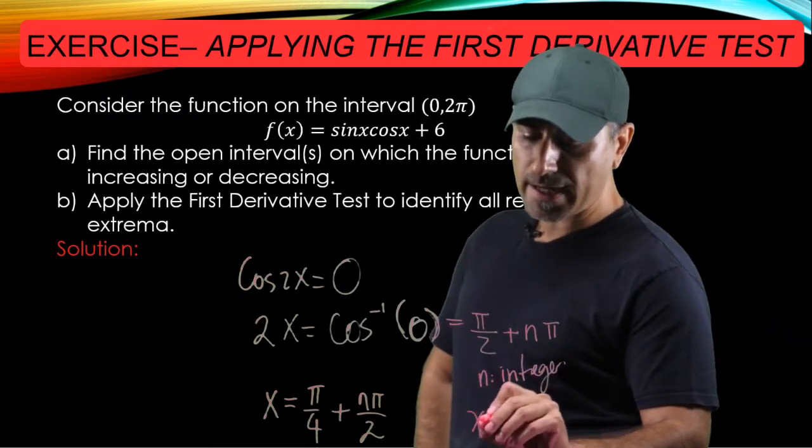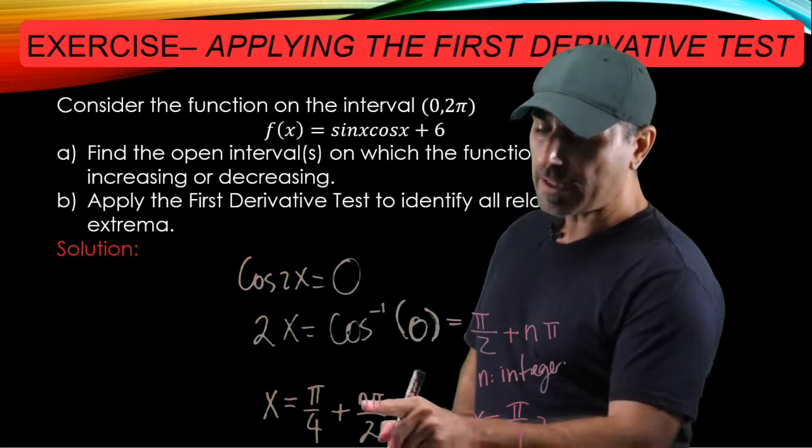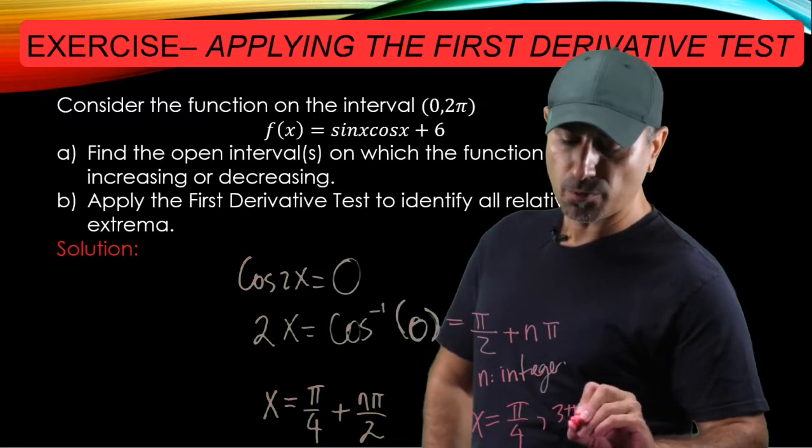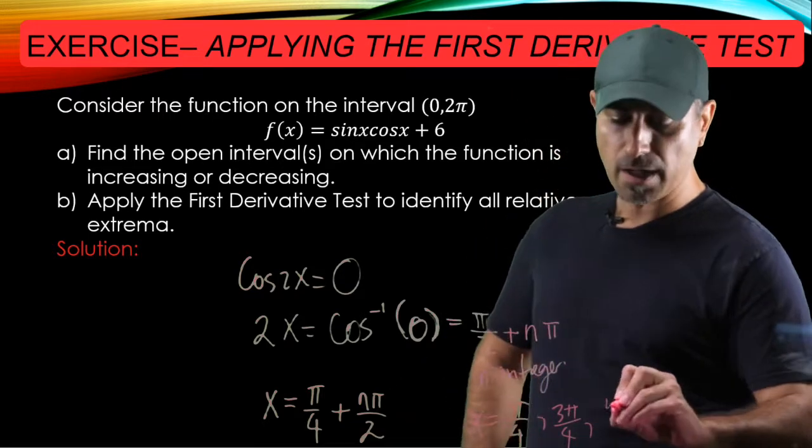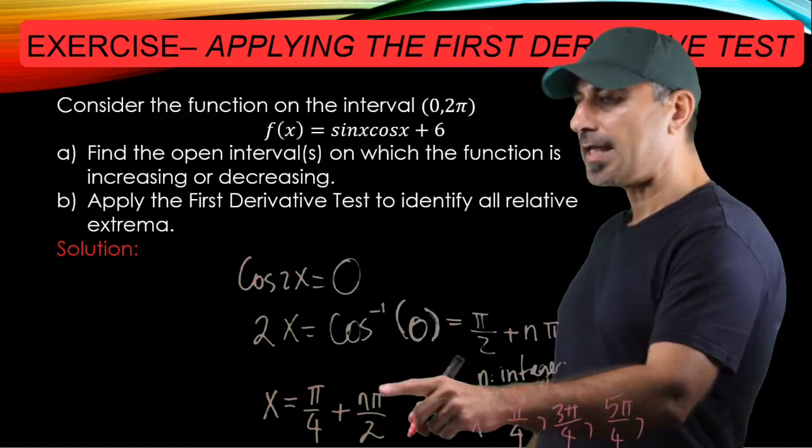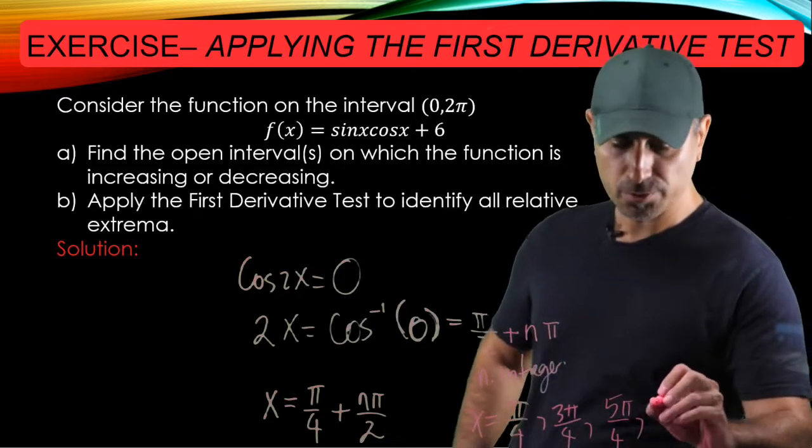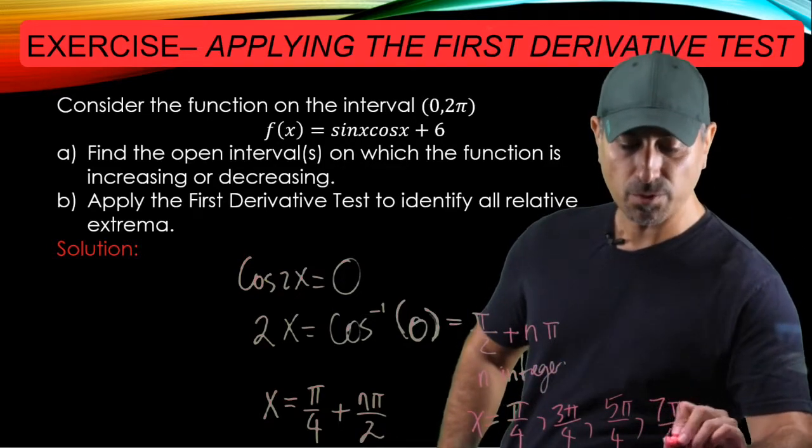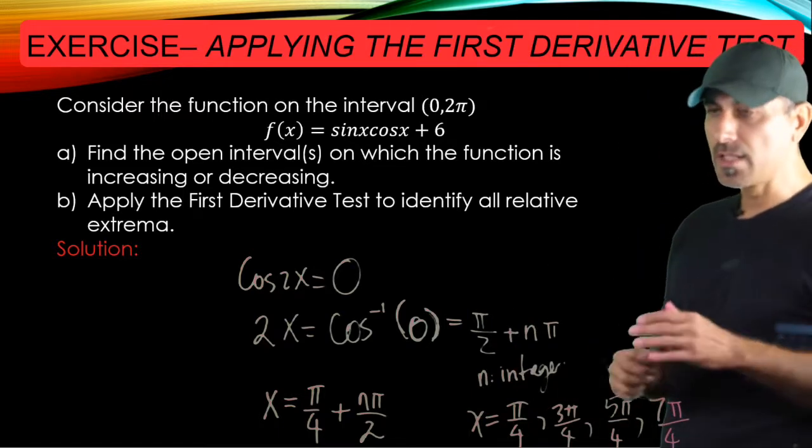So for n equals 0, we have pi over 4. For n equals 1, we have 3 pi over 4. And when n equals 2, this is 5 pi over 4. And finally, for n equals 3, so it's 3 pi over 2 plus pi over 4, that should be 7 pi over 4. And you can convince yourself that there's no other n that would spit out x that fits in this interval 0 and 2 pi.